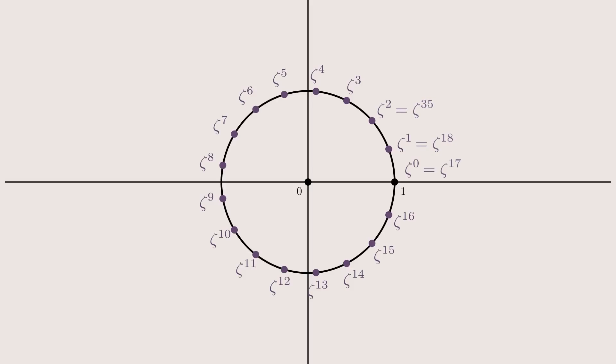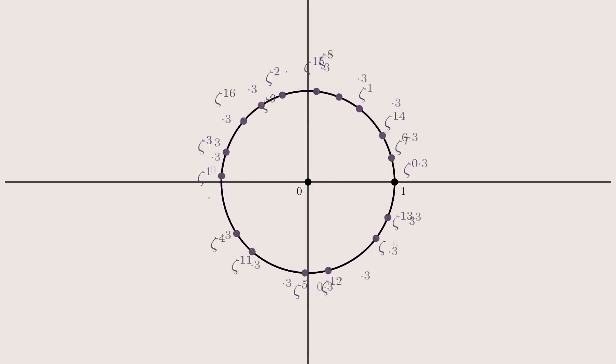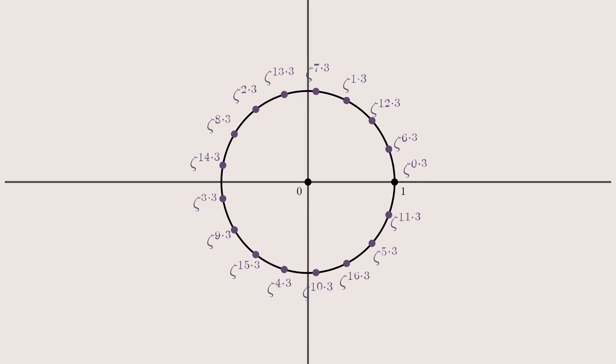When we now raise every zeta to a power, for example 3, that is multiply all angles by 3, we get back all zetas. Starting at ζ₁ and repeatedly raising it to 3 will hit every zeta from ζ₁ to ζ₁₆ exactly once before returning to ζ₁.